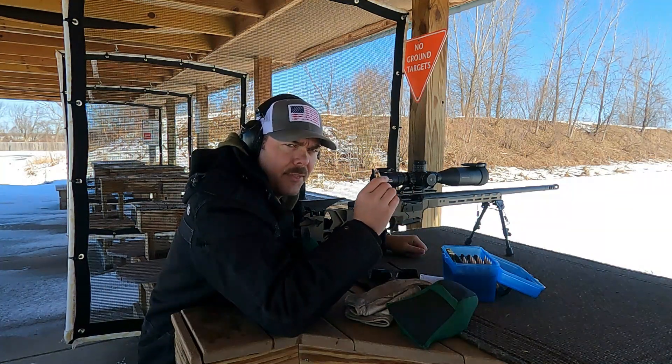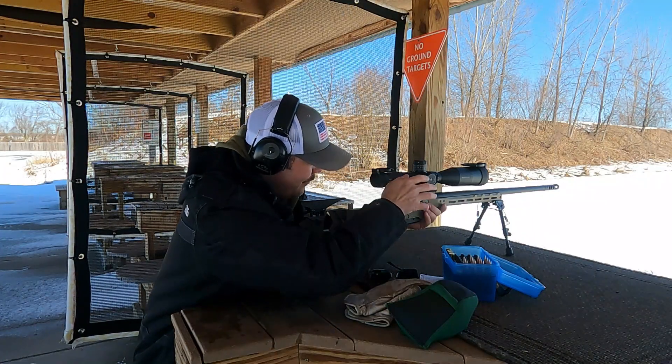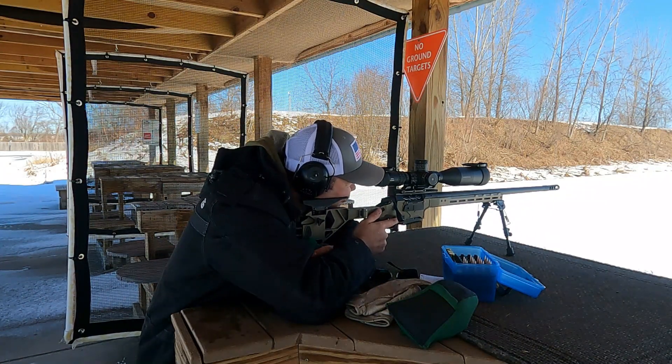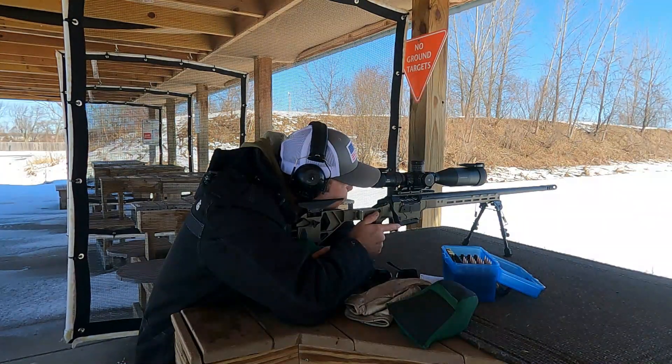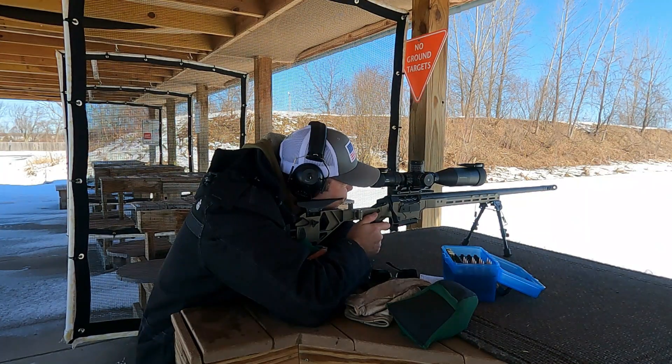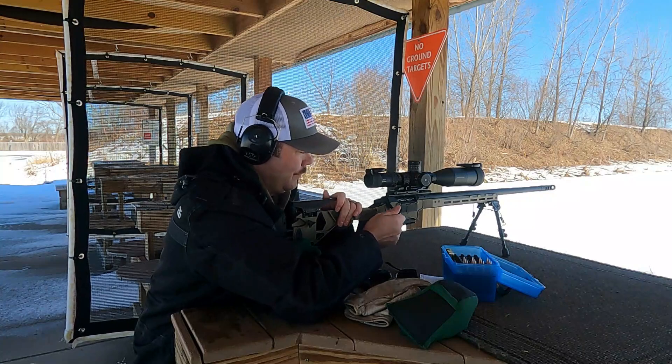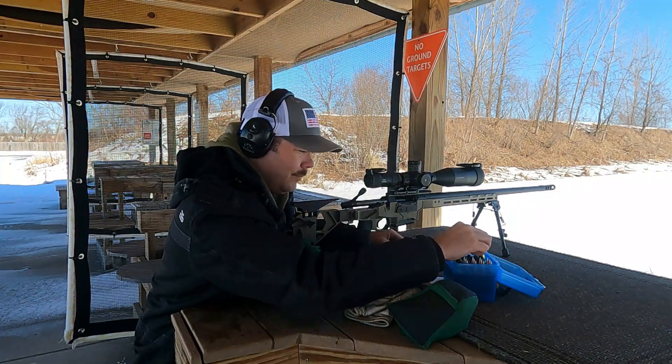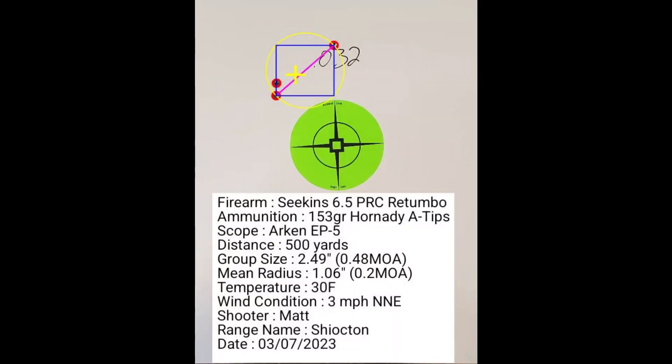This four shot group is at 32 thousandths from jam. At 32 thousandths from jam, I have a little bit of a mystery. Only three of the four shots are on paper and I have no idea where that four shot would have went, but the three that are on paper are a really good group at 0.48 MOA with a mean radius of 0.2 MOA.